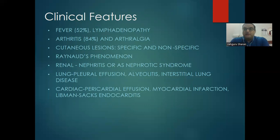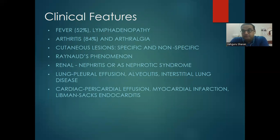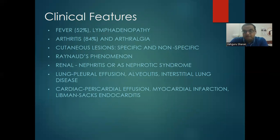Cutaneous lesions in SLE are specific and non-specific — we have already discussed them. Vasculature involvement begins with vasoconstriction and cold sensitivity — a classical feature of collagen vascular diseases — called Raynaud's phenomenon. Raynaud's phenomenon is characterized by the mnemonic WBC: White (vasoconstriction, blood flows away), Blue (blood returns slowly due to vasoconstriction), and Crimson/Red. When you dip the patient's hand in cold water, this sequence occurs. Raynaud's is painful and troublesome to the patient.